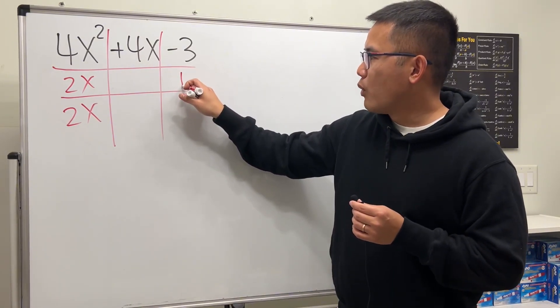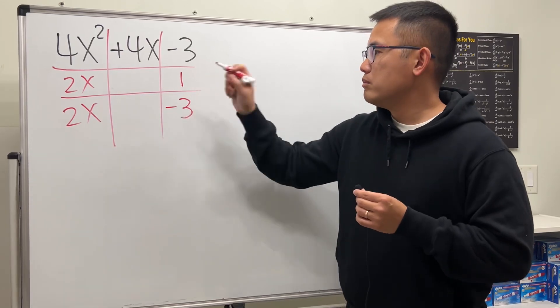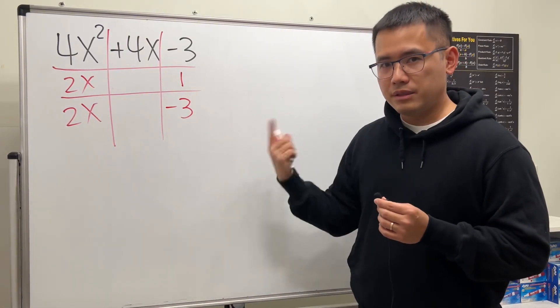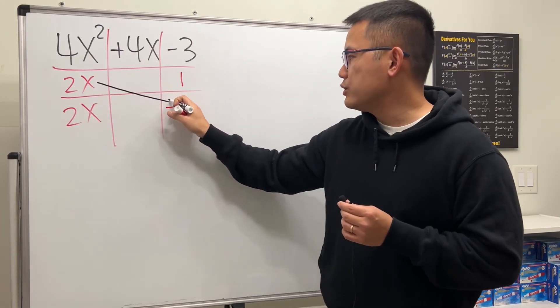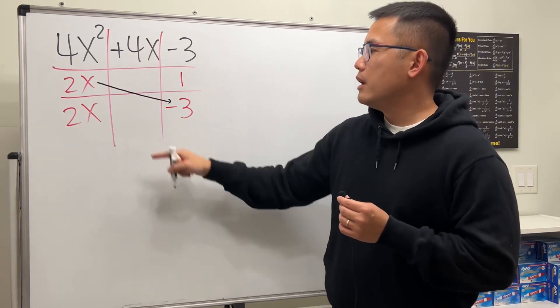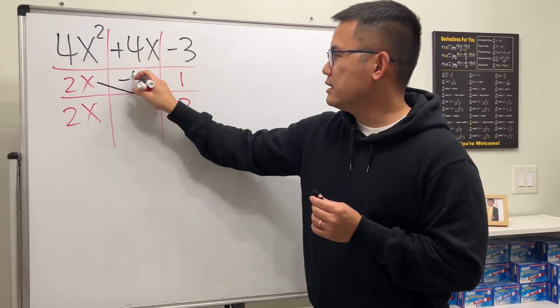Let's try if we have 1 times negative 3. Put that down and then here is the check. I'm going to multiply the 2x with this negative 3, this diagonal like this. 2 times negative 3 is negative 6x.